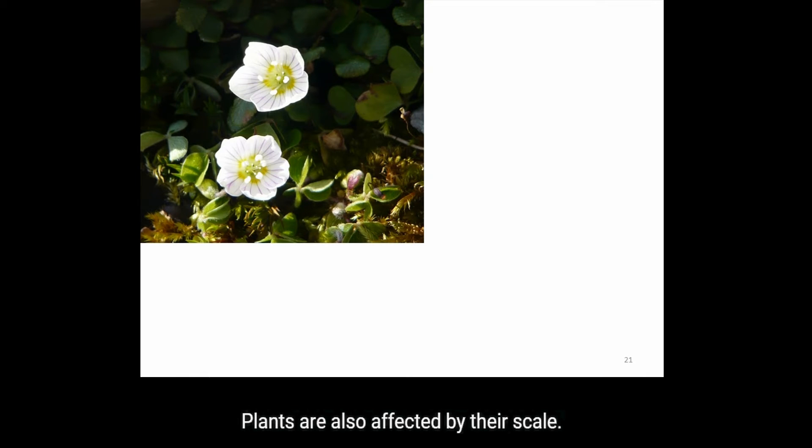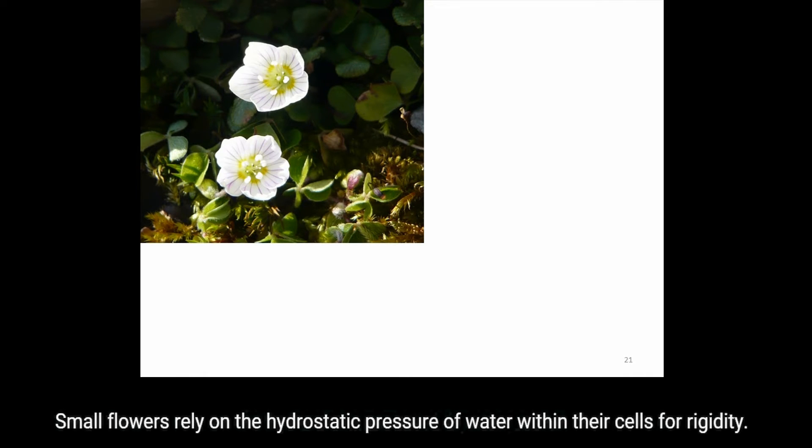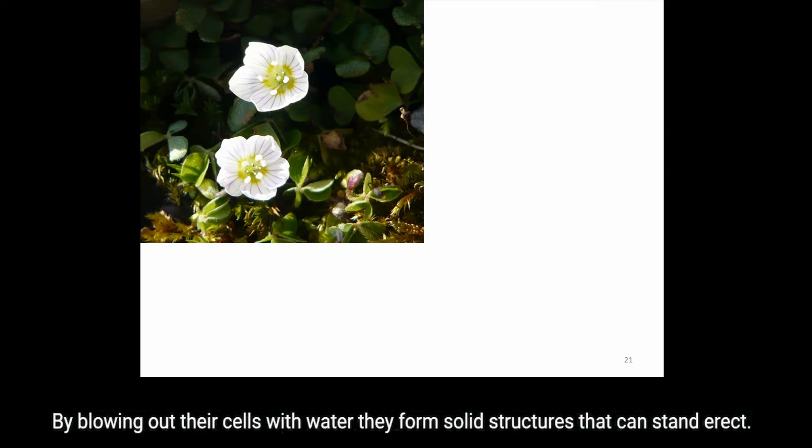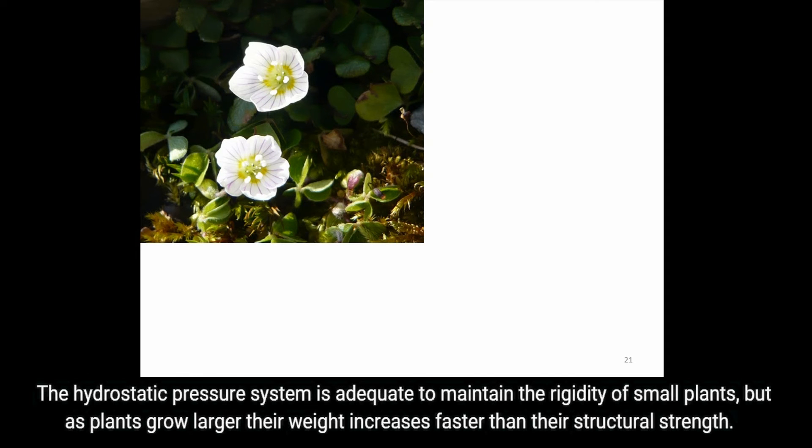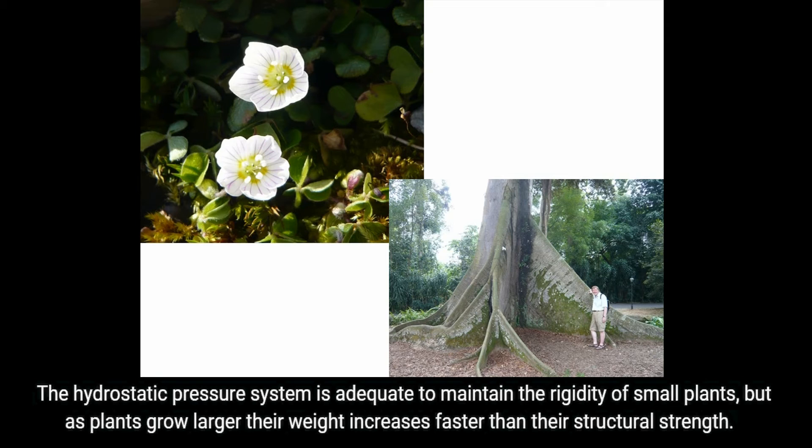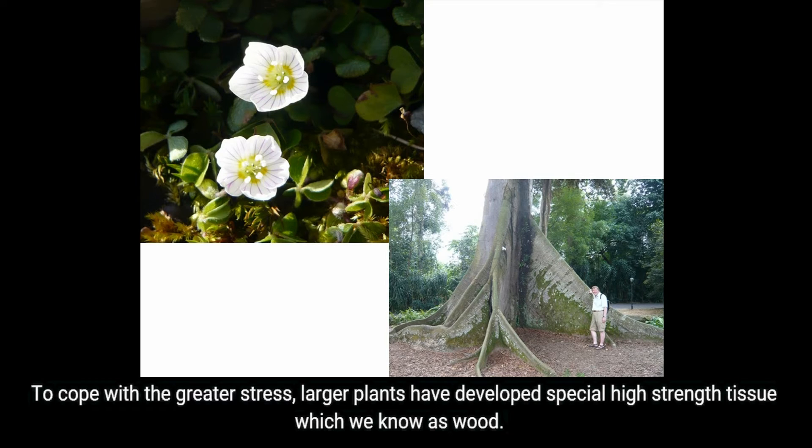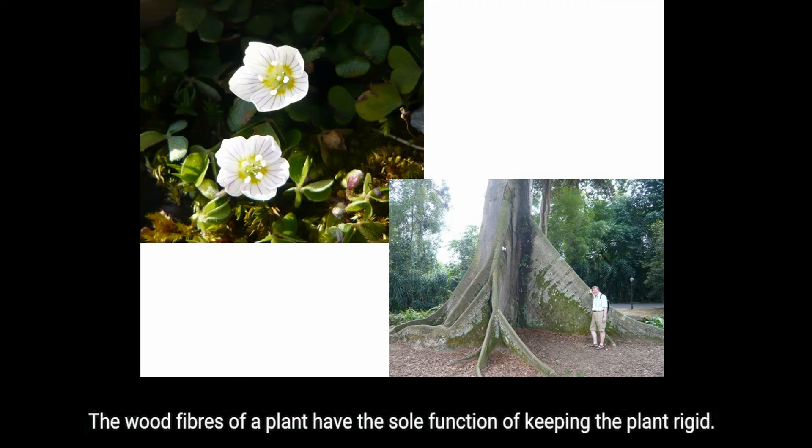Plants are also affected by their scale. Small flowers rely on the hydrostatic pressure of water within their cells for rigidity. By blowing out their cells with water, they form solid structures that can stand erect. The hydrostatic pressure system is adequate to maintain the rigidity of small plants, but as plants grow larger, their weight increases faster than their structural strength. To cope with the greater stress, larger plants have developed special high strength tissue we know as wood. The wood fibers of a plant have the sole function of keeping the plant rigid.